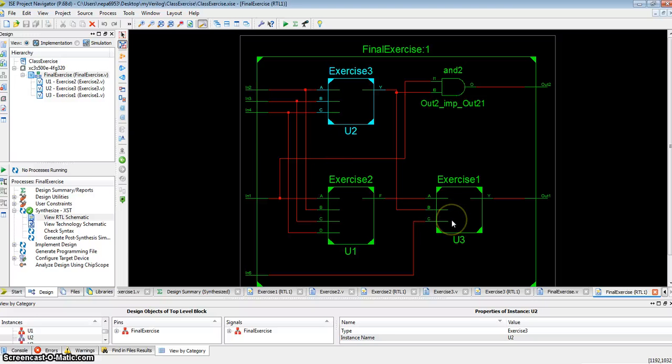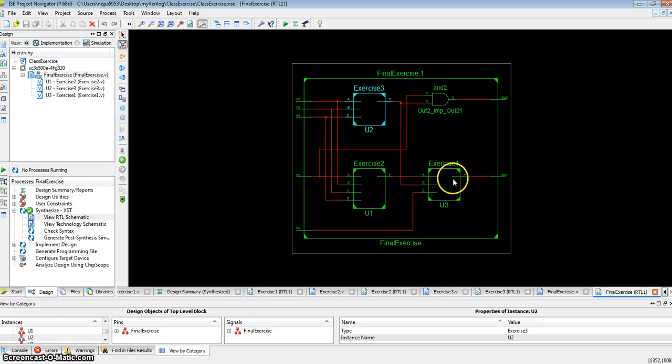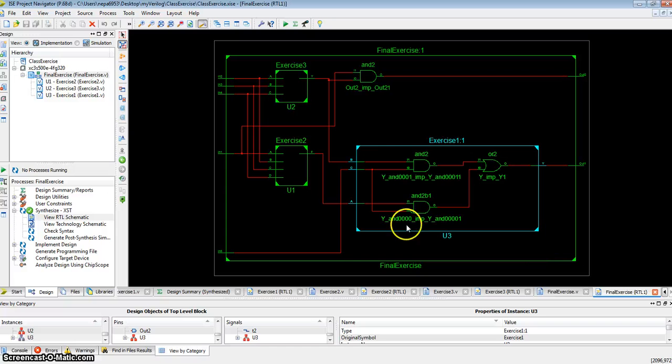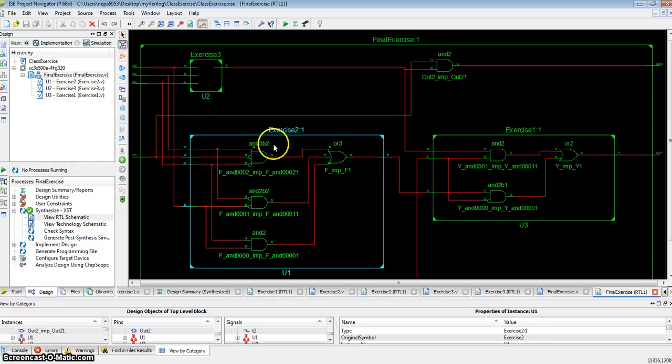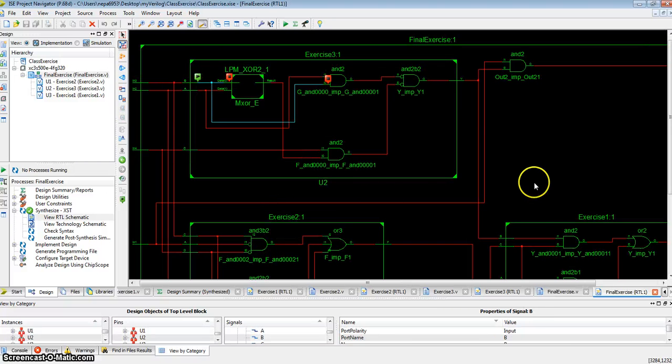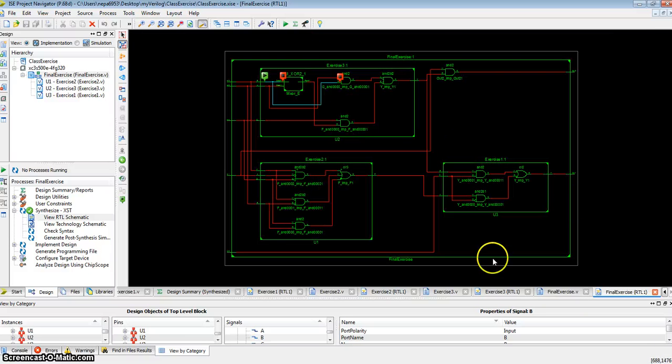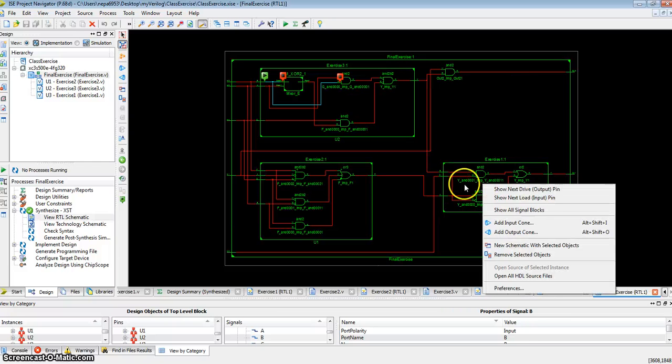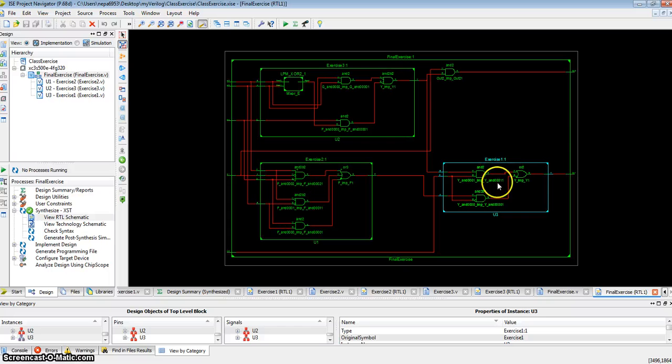So this is a structural description, and we can, of course, go back and look inside what's inside exercise 1, what's inside exercise 2, what's inside exercise 3. So instead of creating one single module that looks this big, by instantiating all the individual gates, we've done a modular design. We've created a module called exercise 1, exercise 2, exercise 3, and combined them into a much larger module.